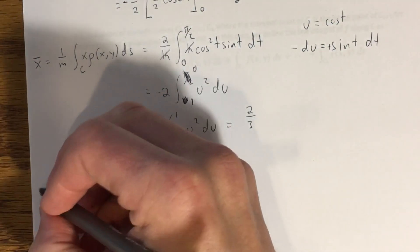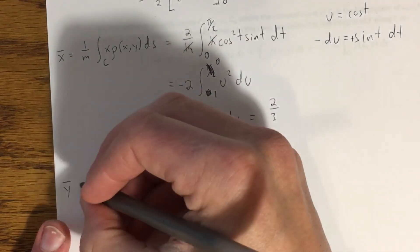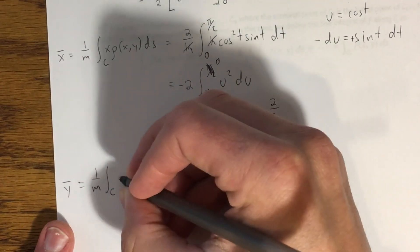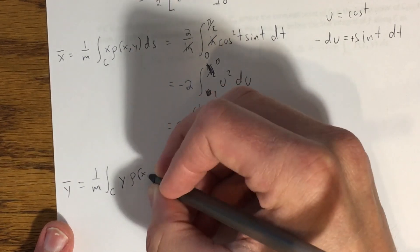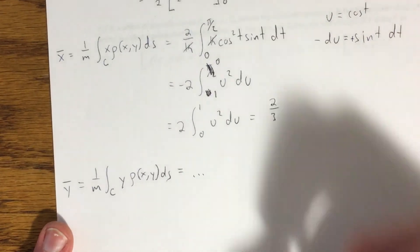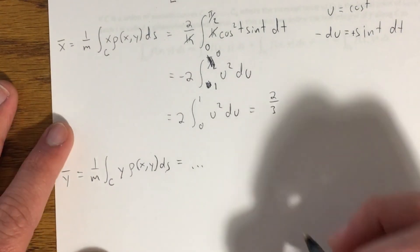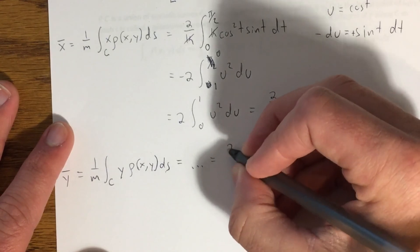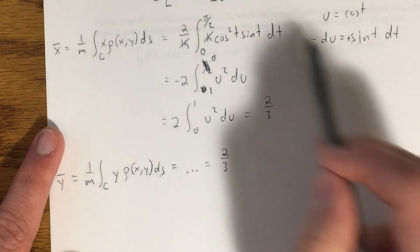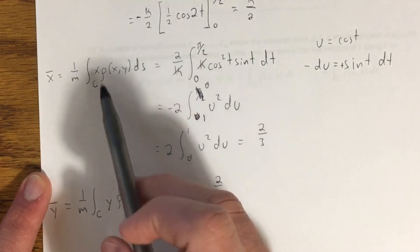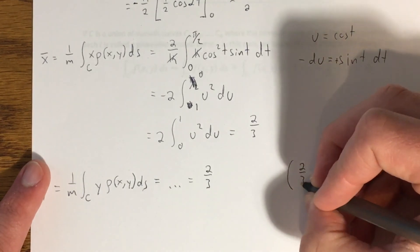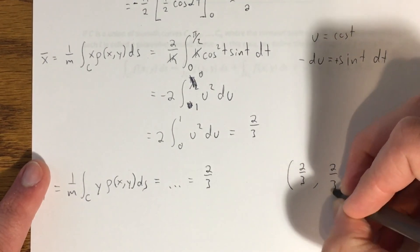Now, y bar, if I do the same thing, but this time we're integrating the function y rho of xy ds, the steps are really, really similar, so I'm not going to walk through the entirety of this one. This also comes out to 2 thirds. And again, I would encourage you to work through this on your own to make sure you're comfortable with these steps, but it's going to be very, very similar to what we just did here. So my center of mass is 2 thirds, 2 thirds.